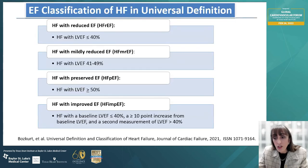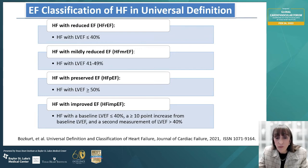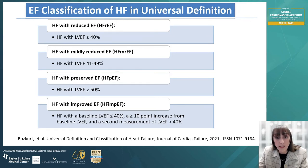In the universal definition, we also provided classifications of ejection fraction: heart failure with reduced EF with EF less than or equal to 40%; mildly reduced EF with EF between 41% to 49%; preserved EF with ejection fraction greater than or equal to 50%; and heart failure with improved EF with a baseline ejection fraction less than or equal to 40%, with more than 10% increase from baseline and a subsequent measurement exceeding 40%.